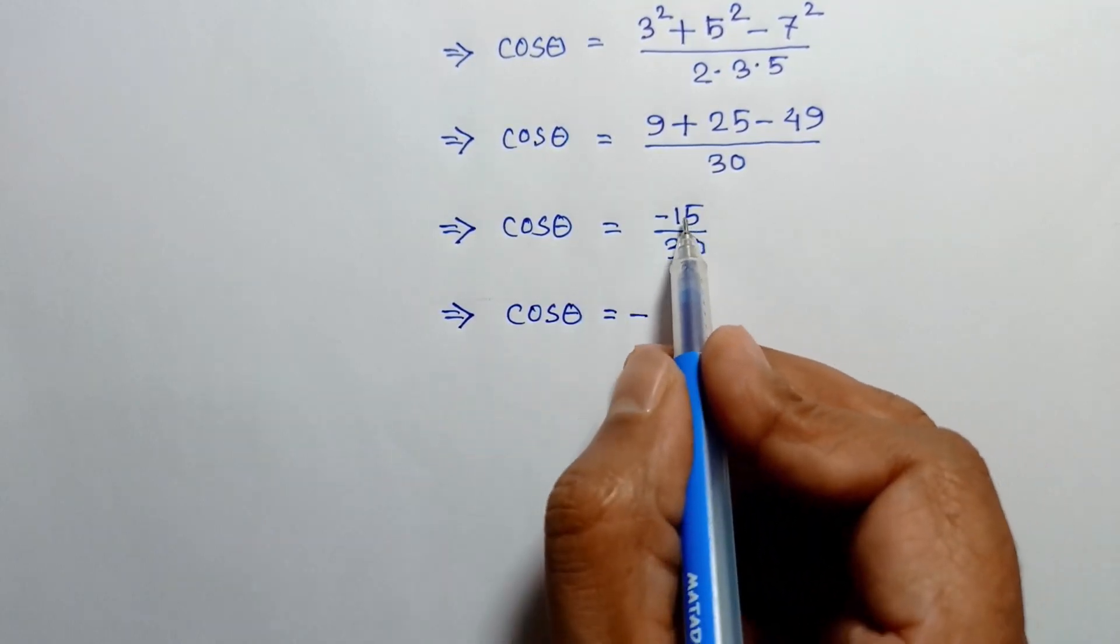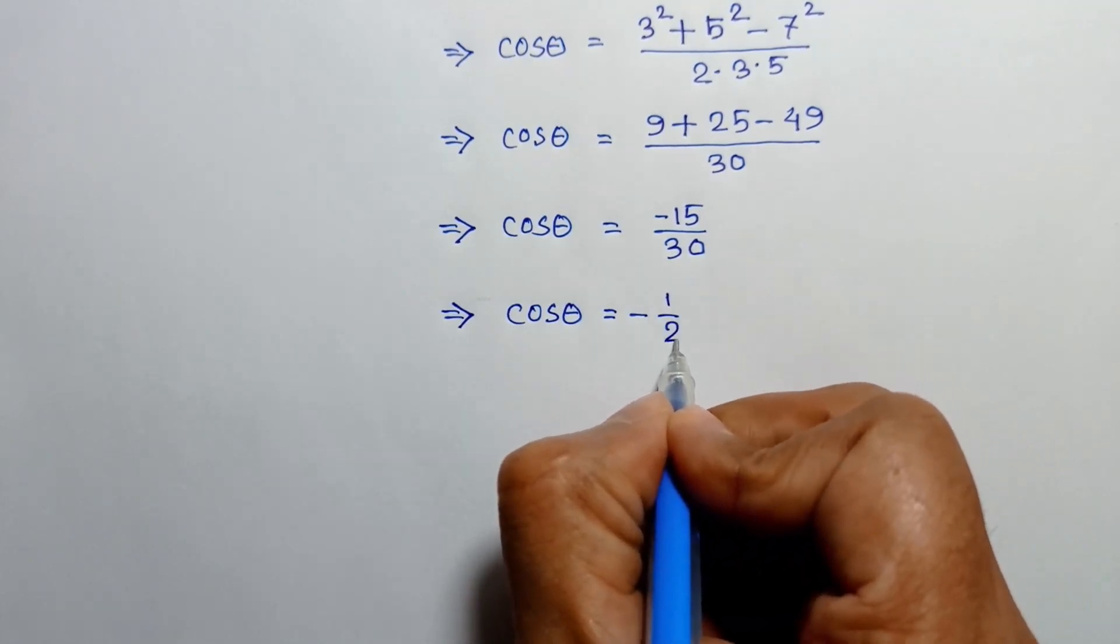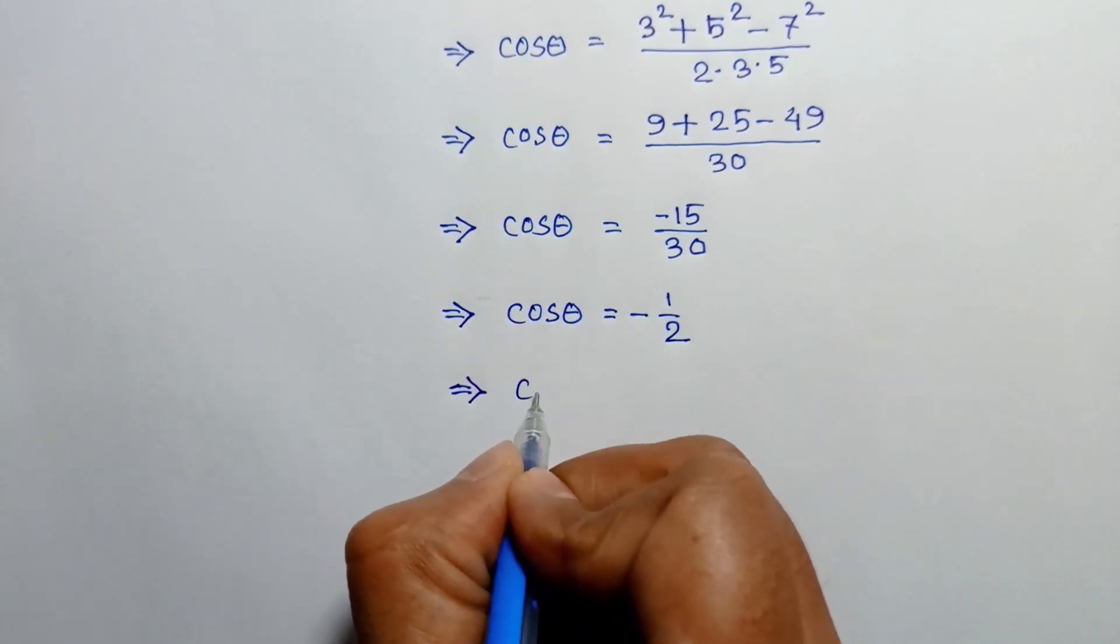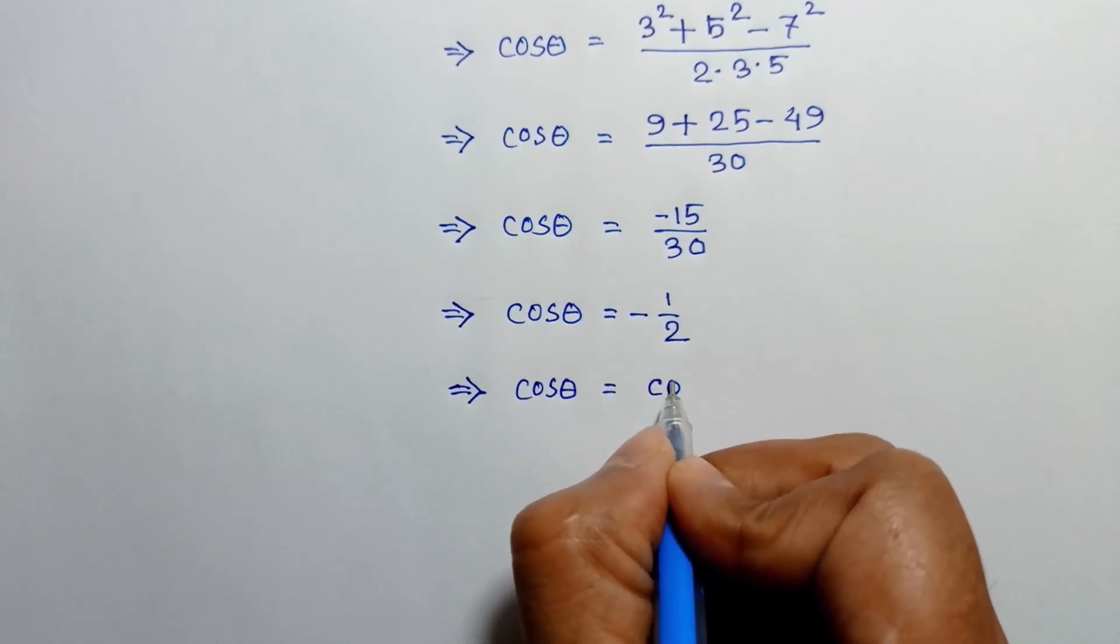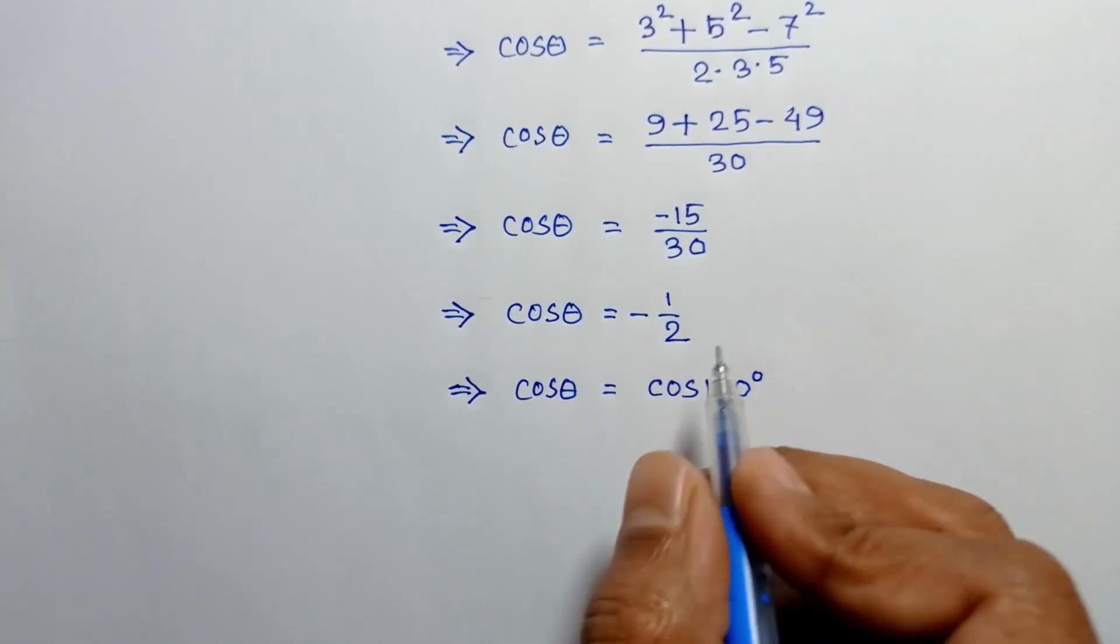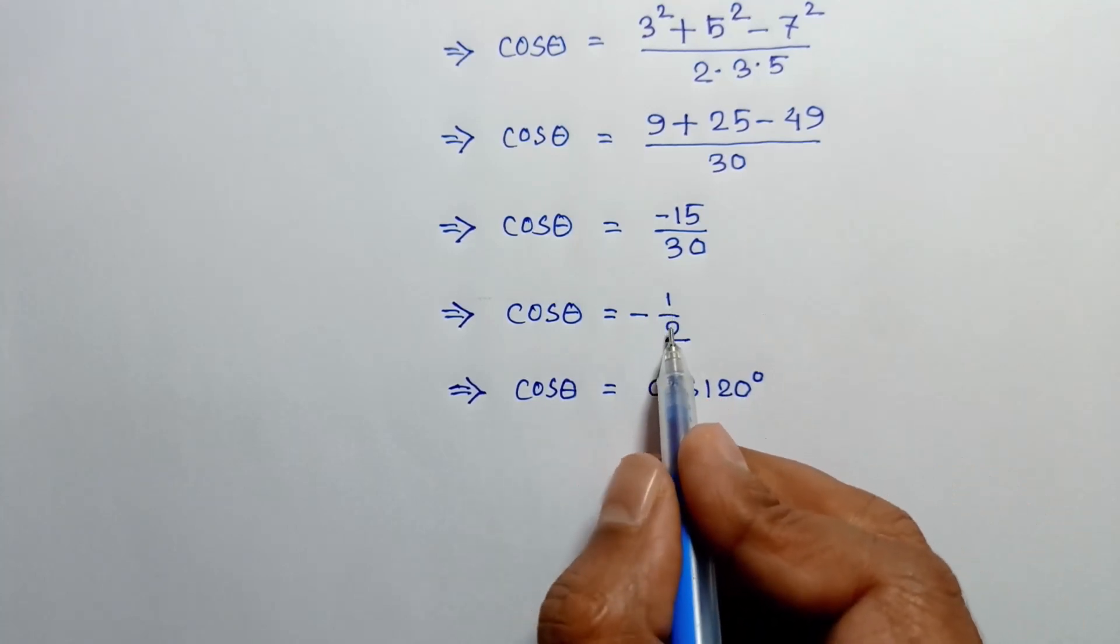15 over 30 is 1 over 2. Or cos theta is equal to cos 120 degree. The value of cos 120 degree is negative 1 over 2.